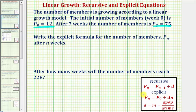This would be the formula P_n = P₀ + d×n, where P₀ is the initial starting amount, which we know is 12. d is the common difference, which we'll have to find, and n would be the number of weeks.